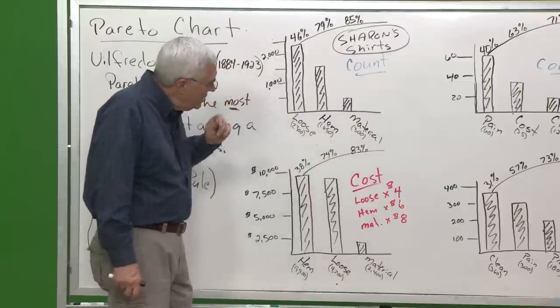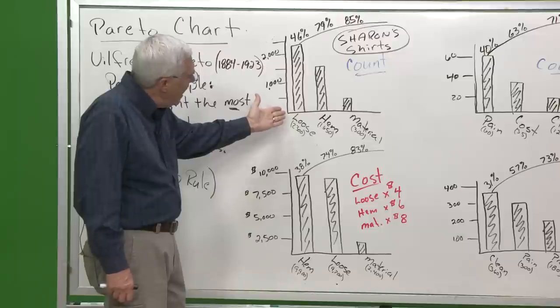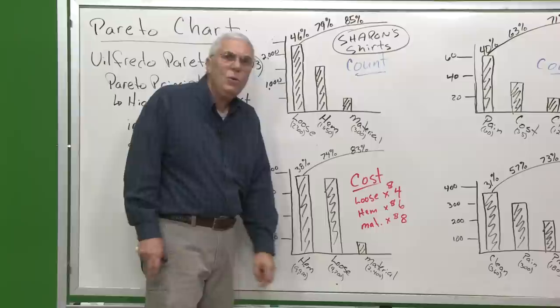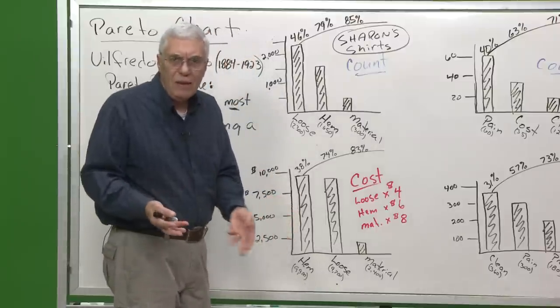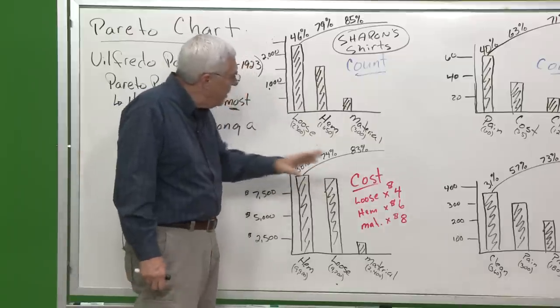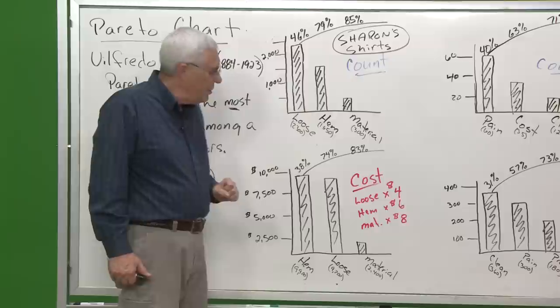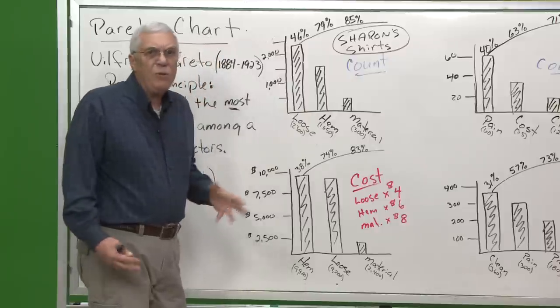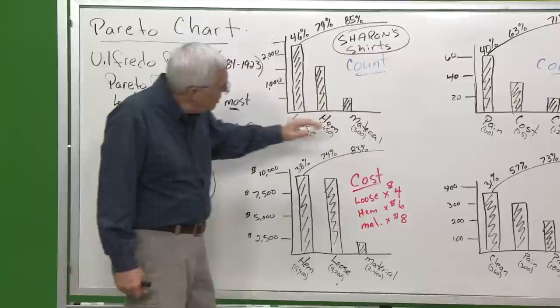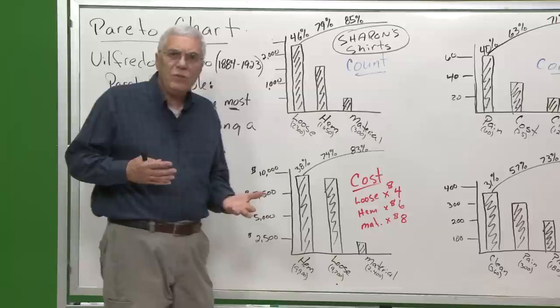So I understand those costs. Now what I'm going to do is take the number of loose threads I have, multiply it by $4, and now I've got a number of $9,200 cost in repairing loose threads. Then I'm going to take the hems, multiply that by the total number of hems, which is 1,650, multiply that by the $6, and I've got almost $10,000 worth of repair from hems. And I'm going to take the material, which is $8 at a pop, and I've got about $2,400 in expense and hems.